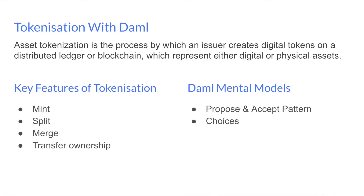Key features related to tokenizing an asset include being able to mint the token, being able to split, being able to merge, and finally transfer of ownership. When doing this with DAML, the mental models to keep in mind are what we call the propose and accept pattern and choices. Each contract will have choices built into them.